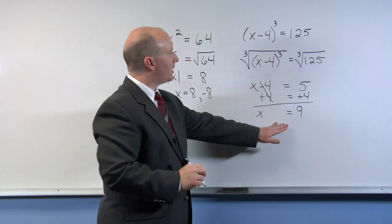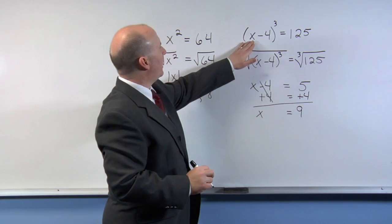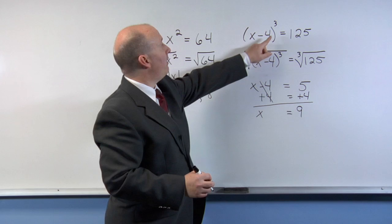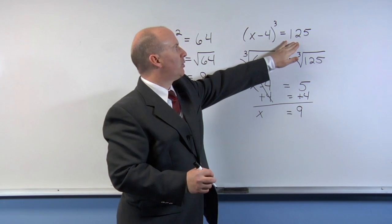We can plug this value back into the original equation to get 9 minus 4, which is 5. 5 raised to the third power is 125.